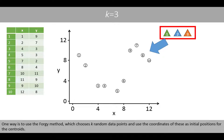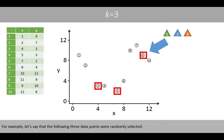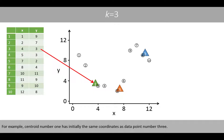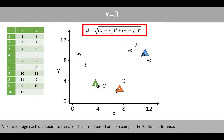One way is to use the 4G method, which uses k random data points and uses the coordinates of these as initial positions for the centroids. For example, let's say that the following three data points were randomly selected. We therefore move the centroids to the coordinates of these three data points. For example, centroid number one has initially the same coordinates as data point number three. Next, we assign each data point to the closest centroid based on, for example, Euclidean distance.